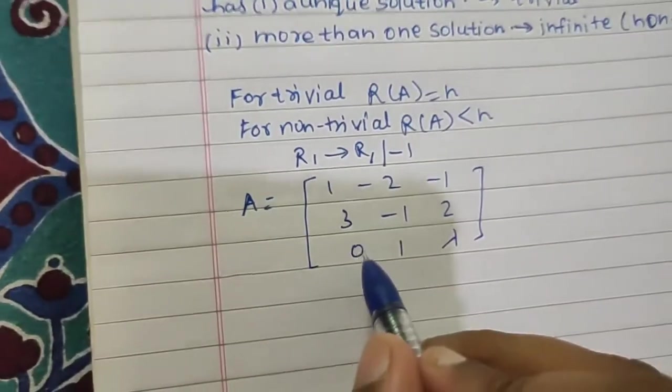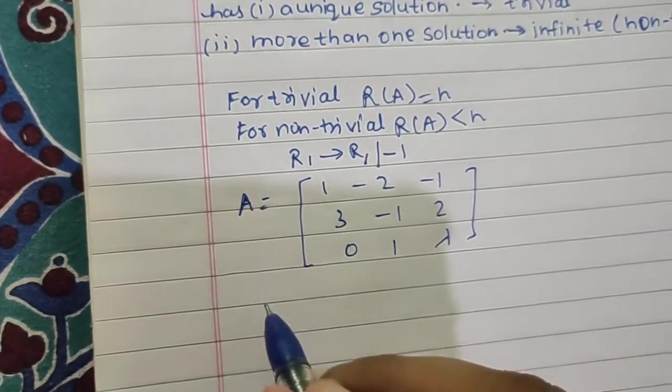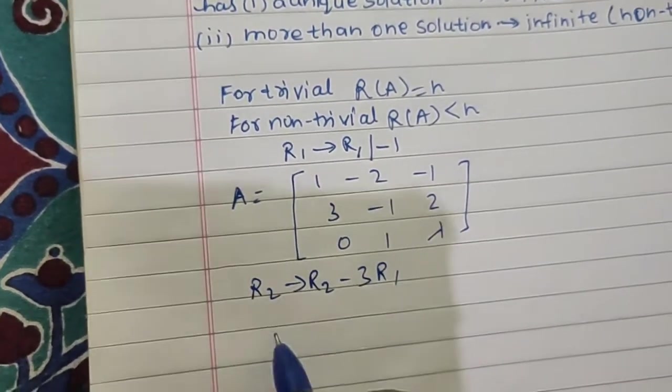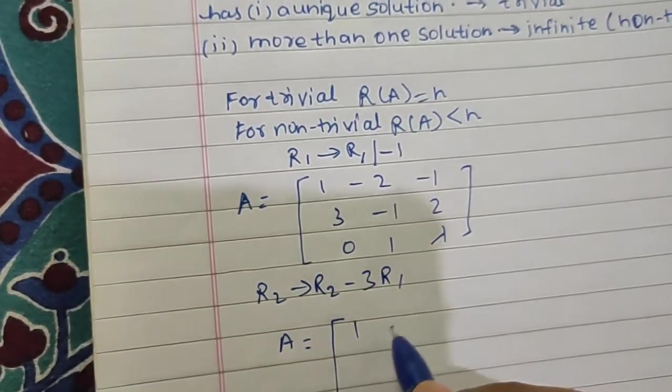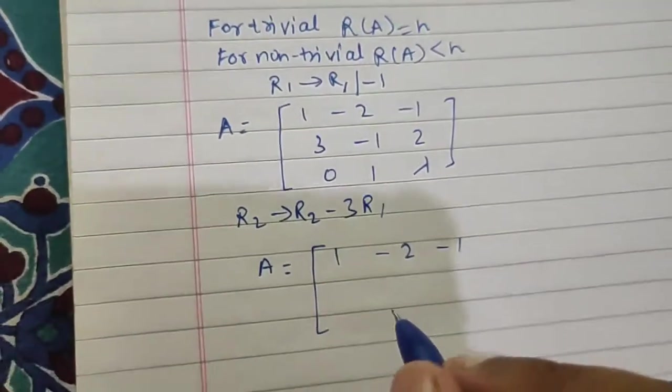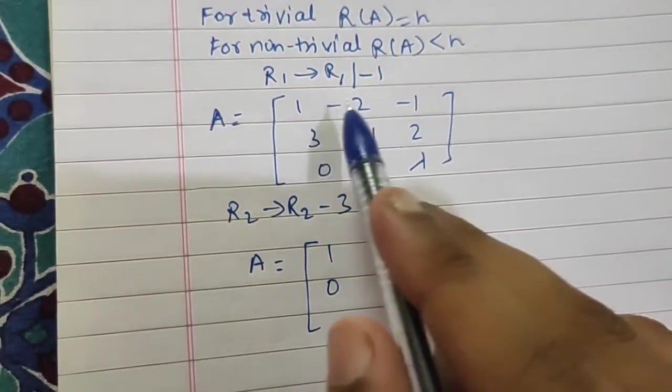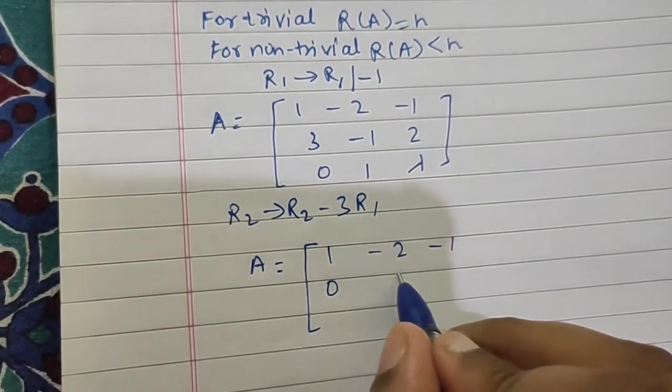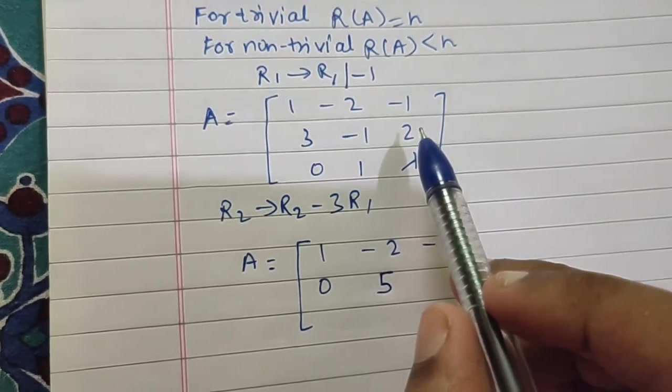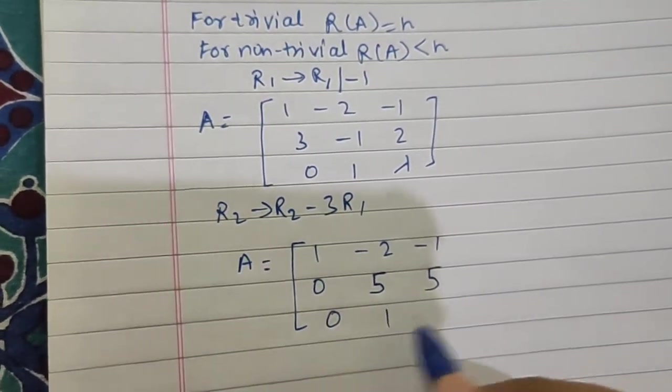This is already 0, that's a benefit, and we want to make this 0. So R2 to R2 minus 3 times R1. Our A converts to 1, minus 2, minus 1; 0, minus 1 plus 6 which is 5, and 2 plus 3 is 5 again; 0, 1, lambda.